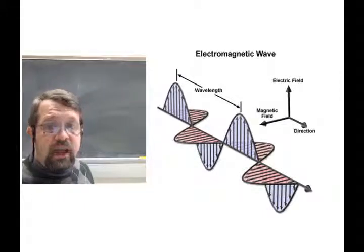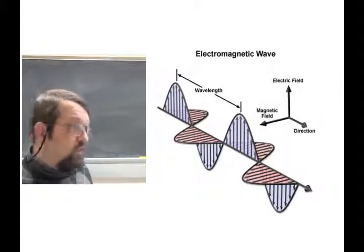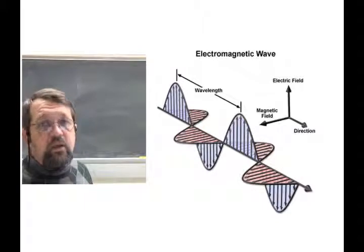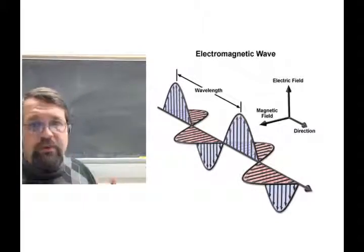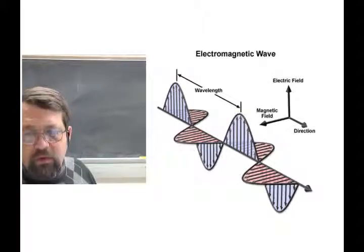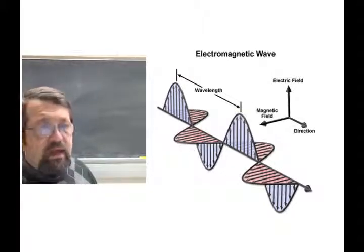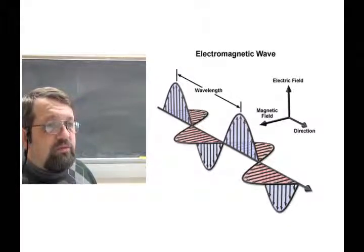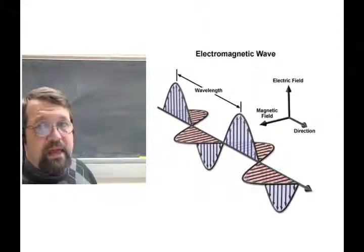But unlike a sound wave, which is not a transverse wave — the motions of the air molecules are in the same direction as propagation of the sound wave — light is transverse. And the rule of thumb here is that the direction of propagation of light is in the direction of the cross product E cross B.